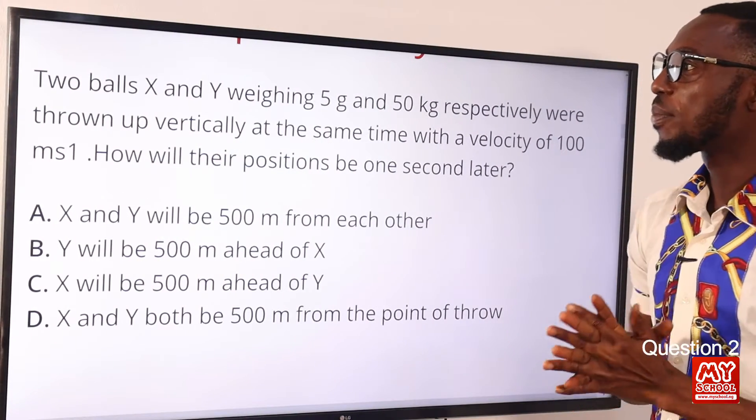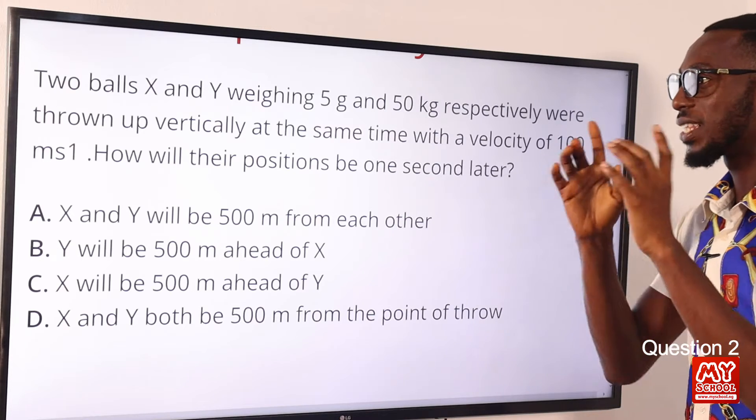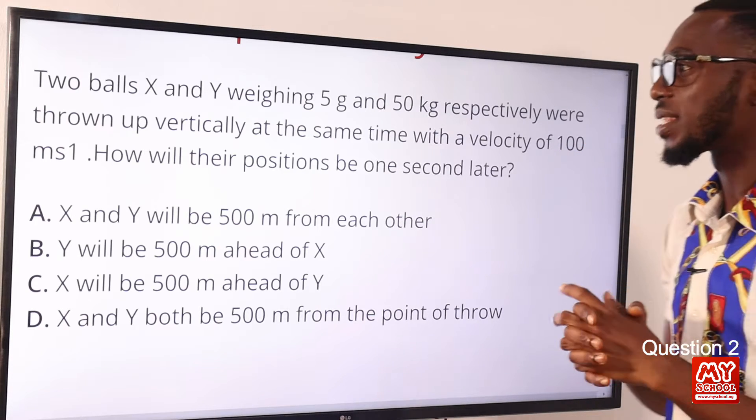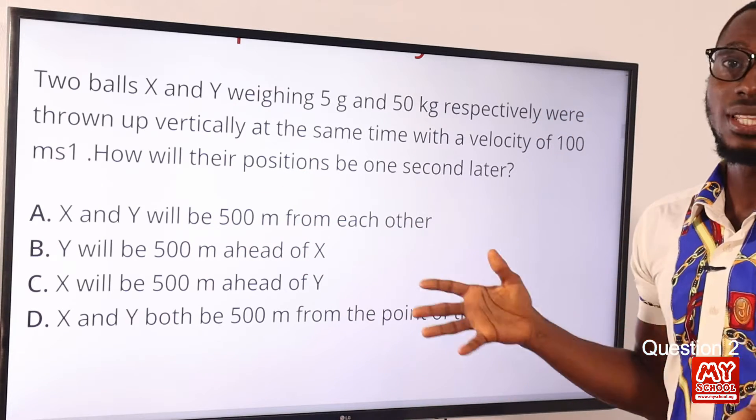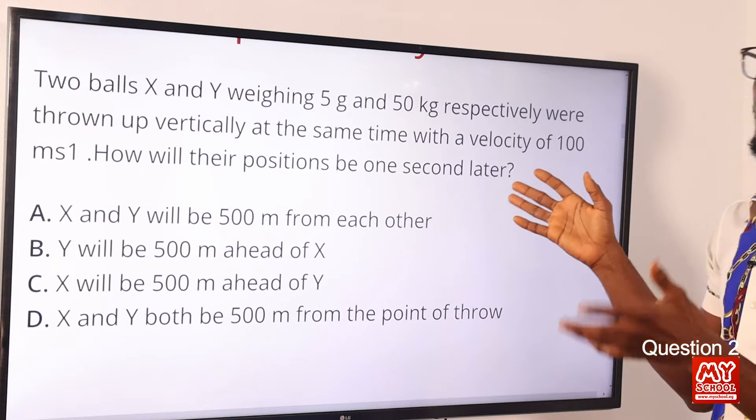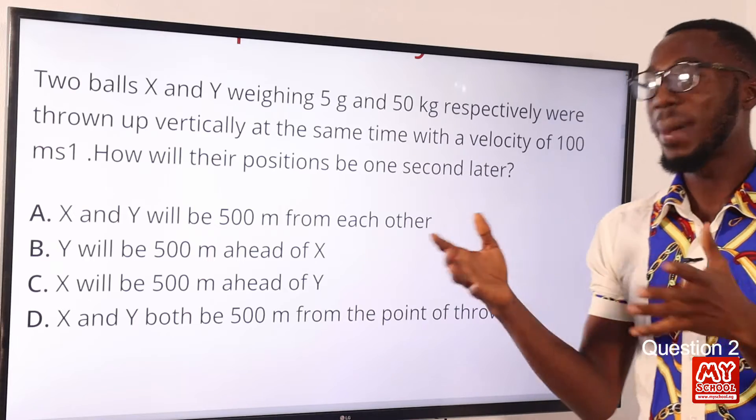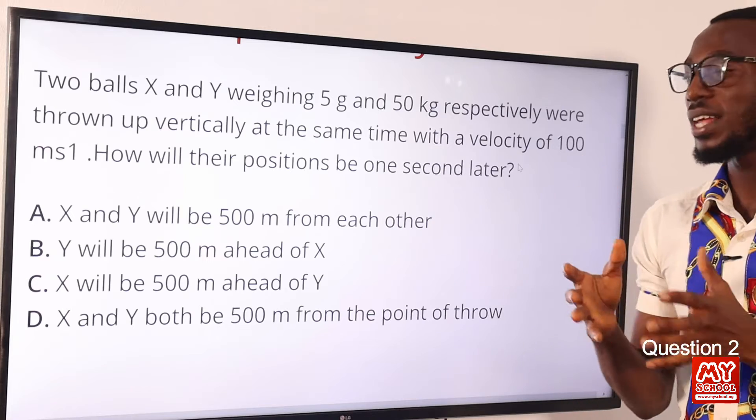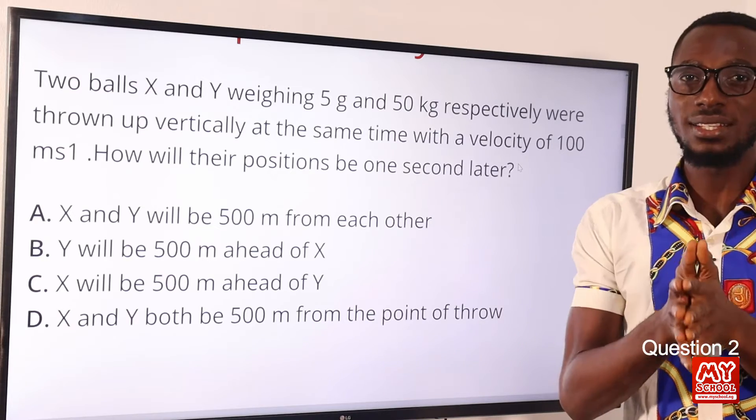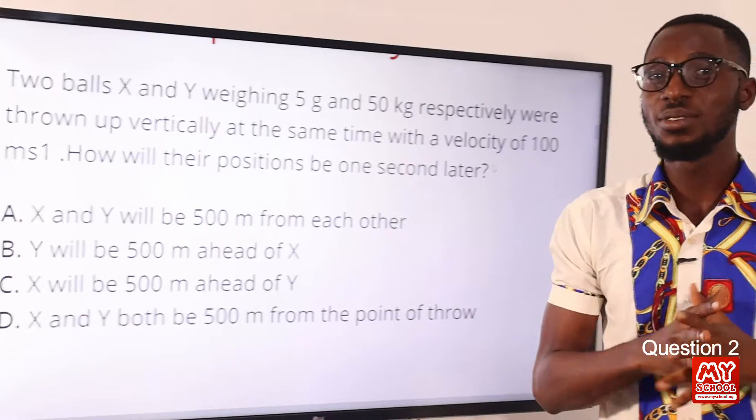Question 2. Two balls X and Y weighing 5 grams and 50 kilograms respectively were thrown up vertically at the same time with a velocity of 100 meters per second. How will their positions be after 1 second later? Once you understand the relationship between acceleration due to gravity and the masses on Earth, the Earth's gravitational pull, you will know that the action of acceleration due to gravity is irrespective of mass, especially when you remove air resistance. So let's go to the board to provide solution to this question.